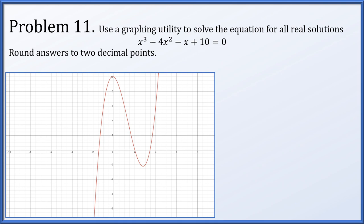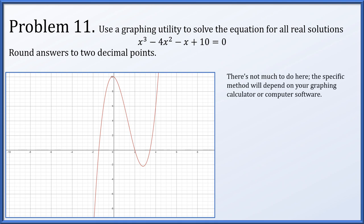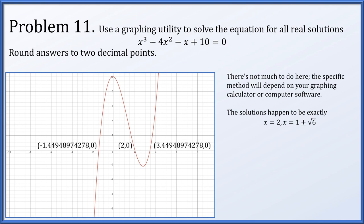Problem 11: use a graphing utility to find all real solutions to x³ − 4x² − x + 10 = 0. You use your calculator or computer software to produce the graph. The exact solutions are x = 2 and x = 1 ± √6, which as decimal approximations are approximately 2, −1.45, and 3.45.